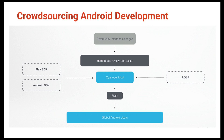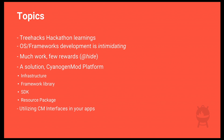Essentially, what we do is crowdsource Android development. We get community changes that are incoming, we roll them into our nightly release builds, and those actually ship on devices every single night. Today, however, we're going to be talking about how this delta grew a little too large and became a little bit unmanageable.